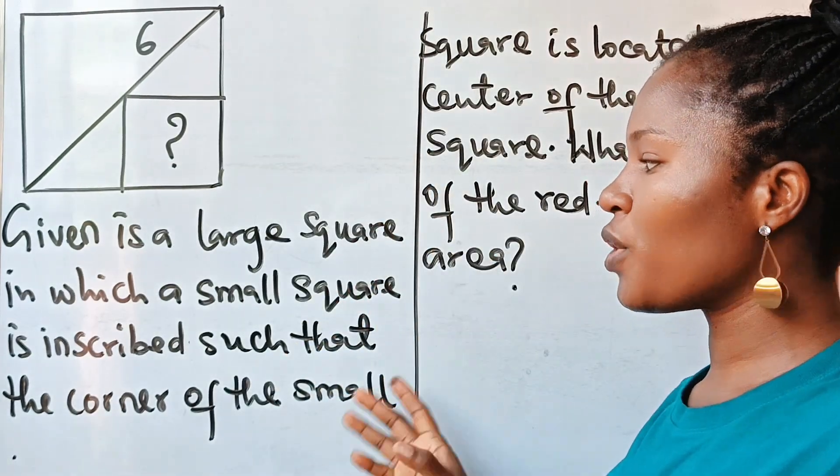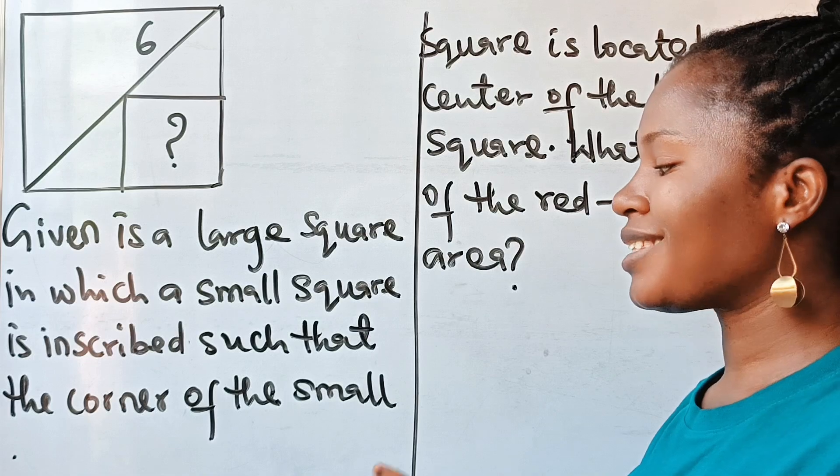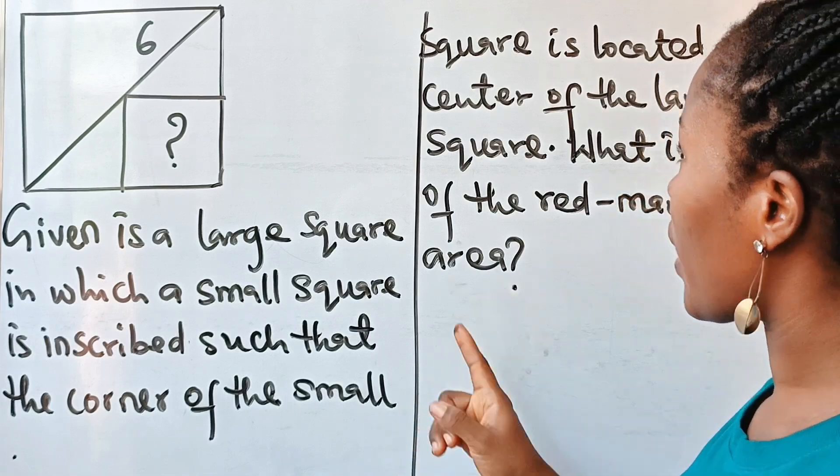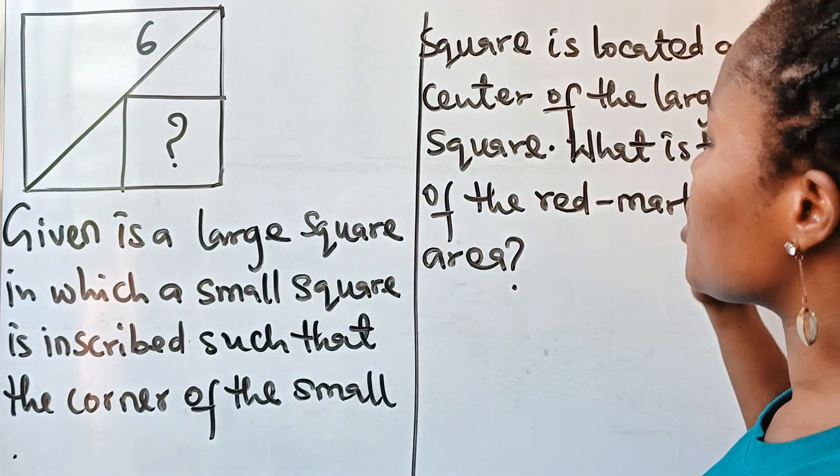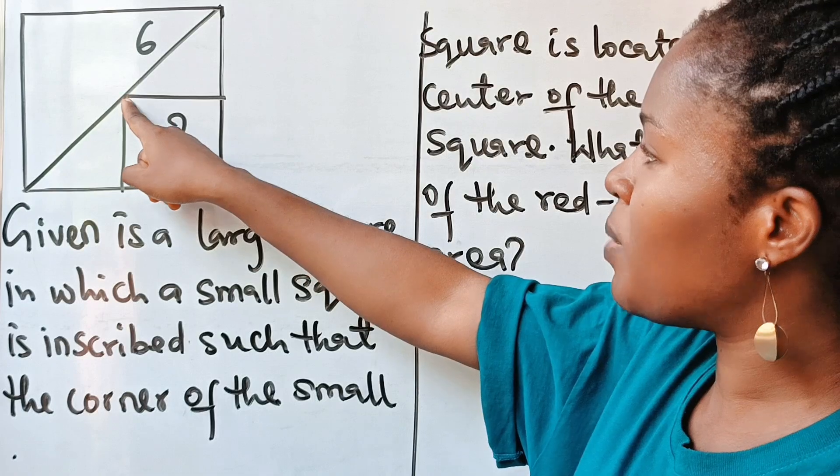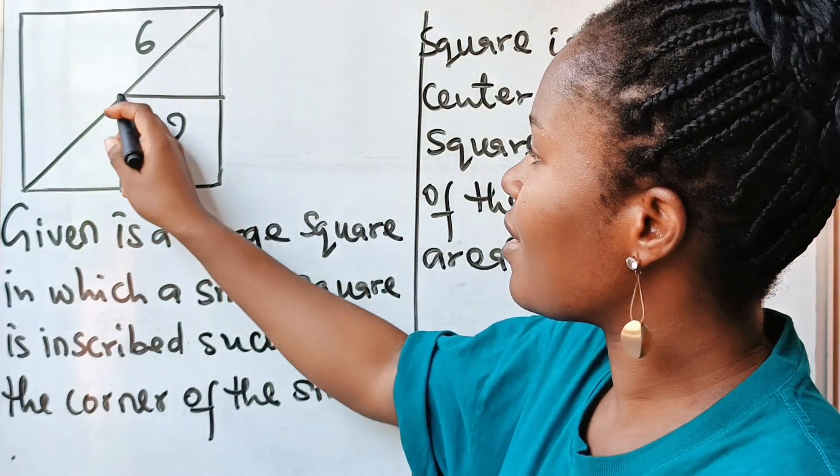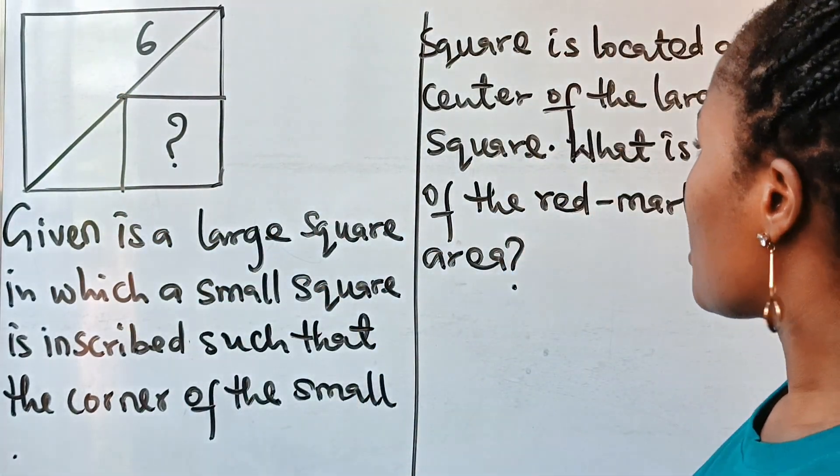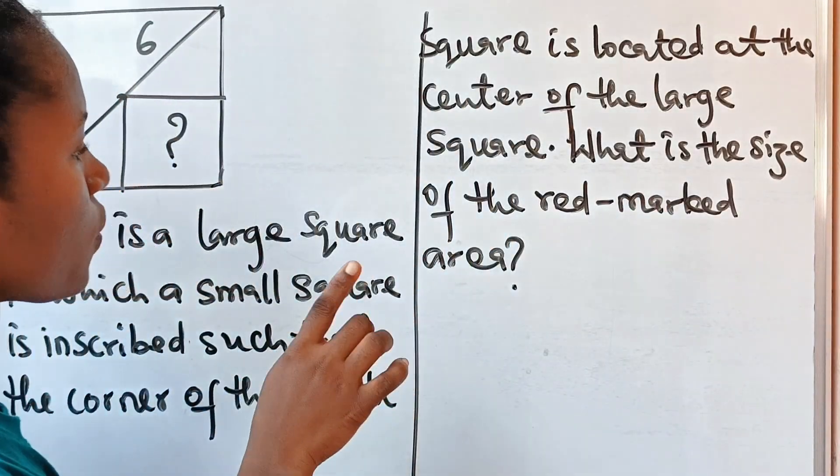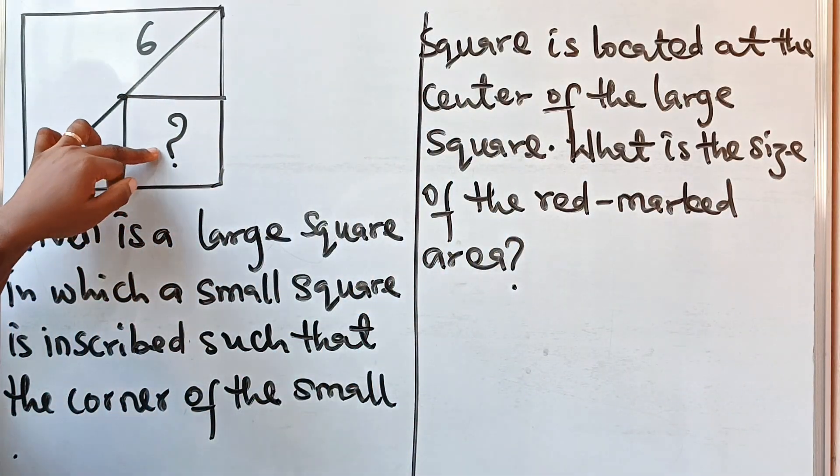A large square in which a small square is inscribed such that the corner of the small square is located at the center of the large square. That is this place, it means that this is the center of the large square. Now the question says what is the size of the red marked area, that is this place. What is the size?